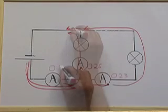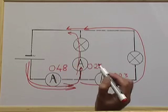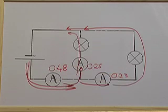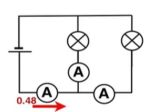If we add onto the circuit diagram the ammeter values, it reminds us that 0.48 amps splits into two parts, which add together to 0.48. That's 0.25 and 0.23.